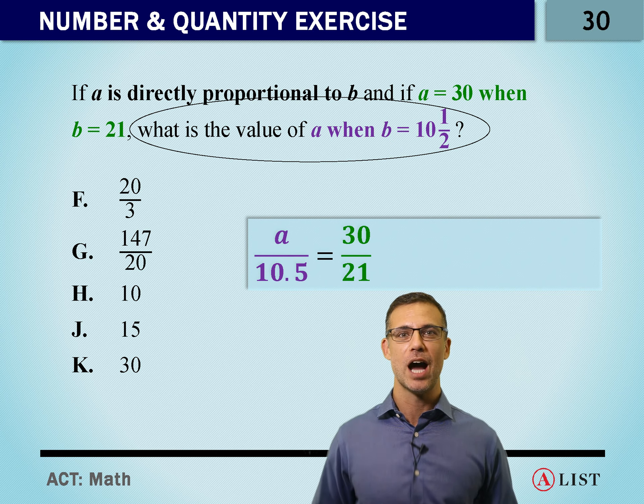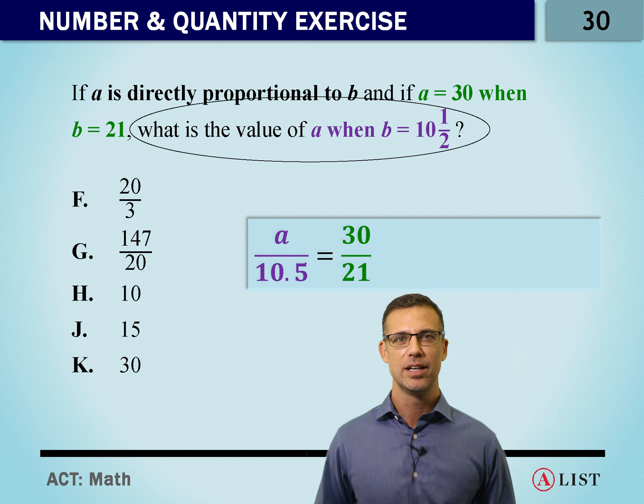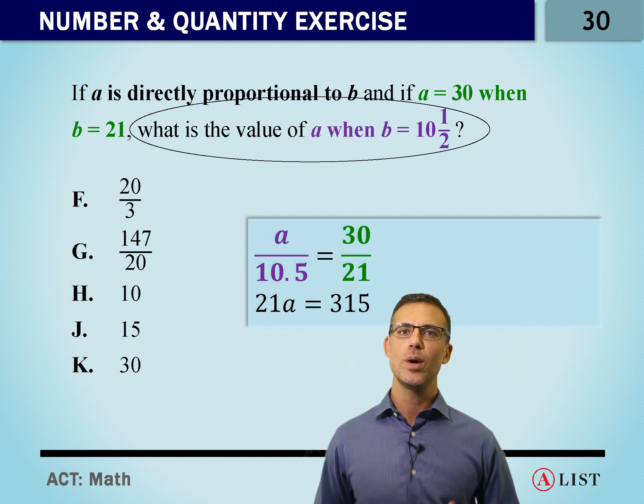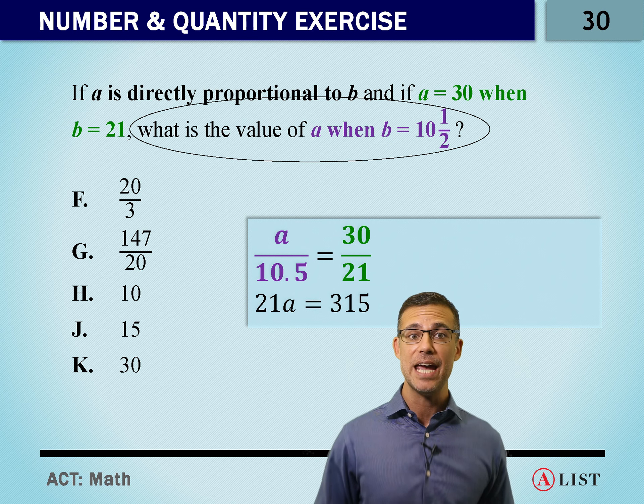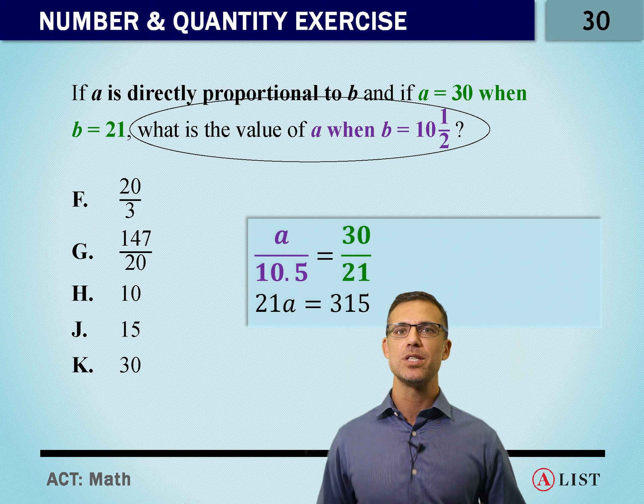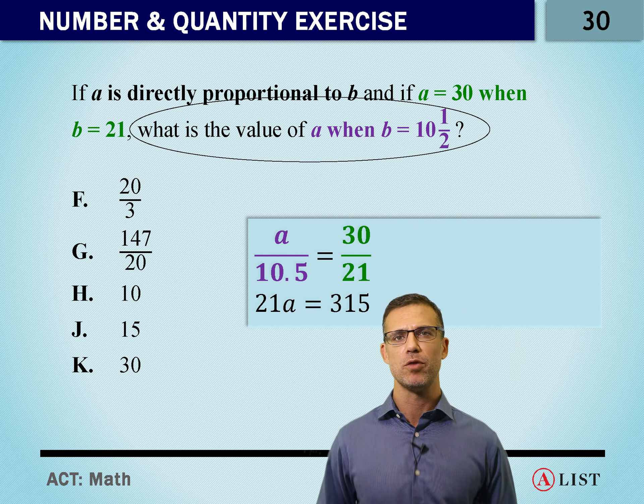Now we've got a proportion on one side of an equal sign, and a proportion on the other side of an equal sign. What can we do to solve for A? We can cross multiply. So we have 21 times A is 21A. We have 30 times 10.5, which is 315.